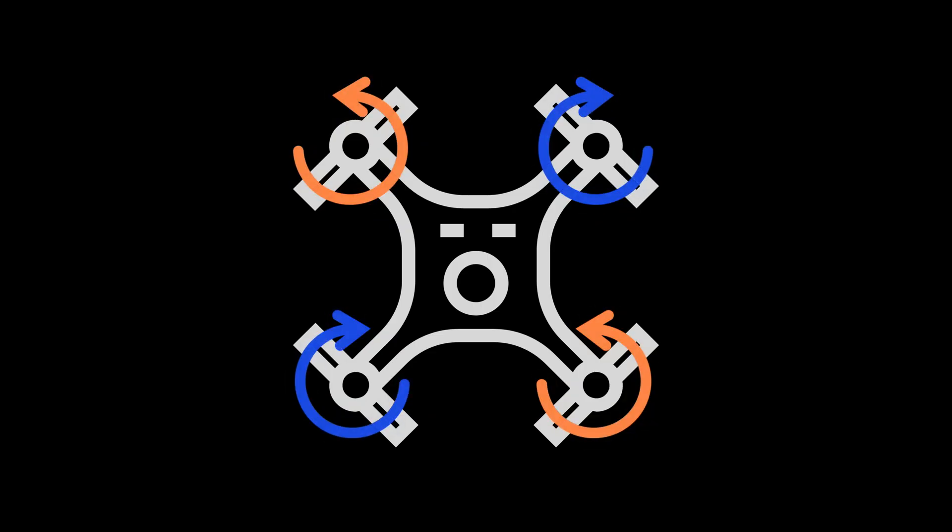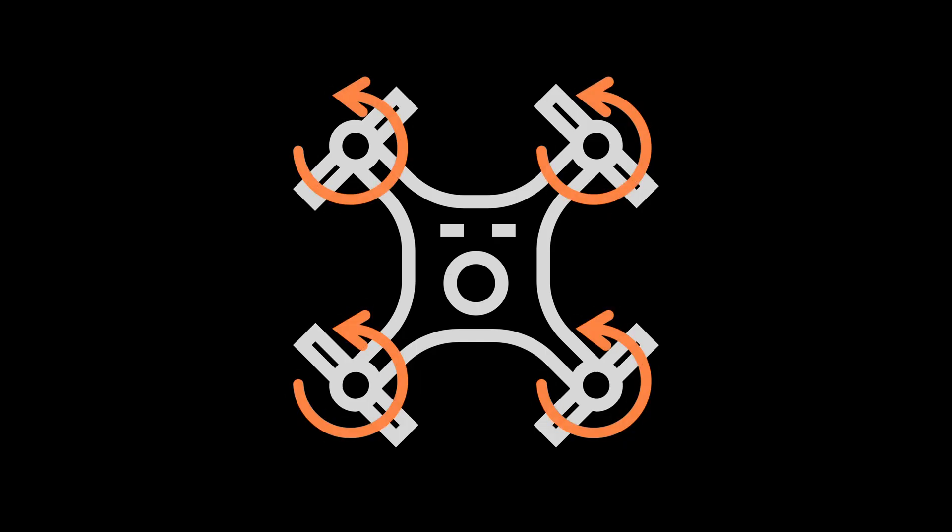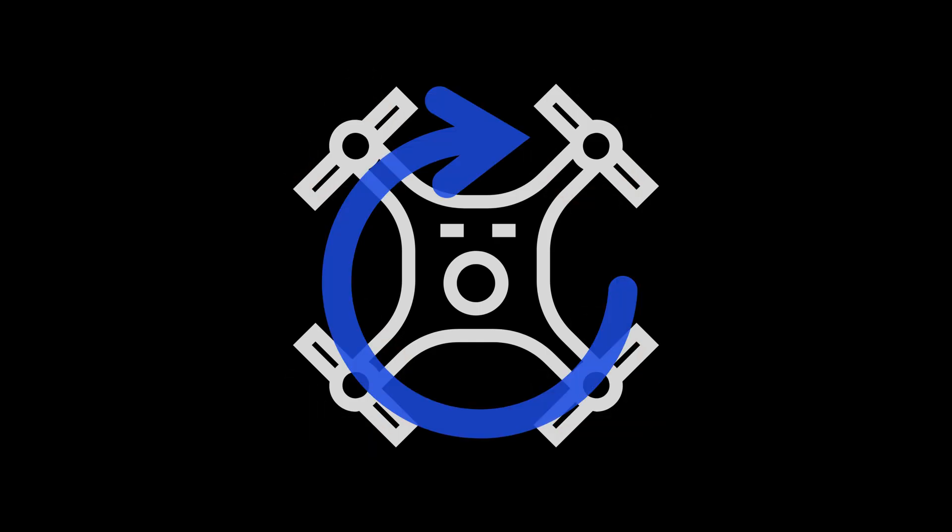Importantly, not all four propellers spin in the same direction. Instead, two spin clockwise, while the other two spin counterclockwise. This is done deliberately to cancel out the torque that each propeller generates. If all propellers were to spin in the same direction, the drone would begin rotating uncontrollably in the opposite direction due to unbalanced torque.